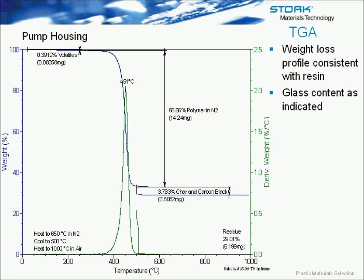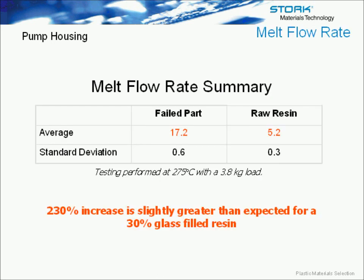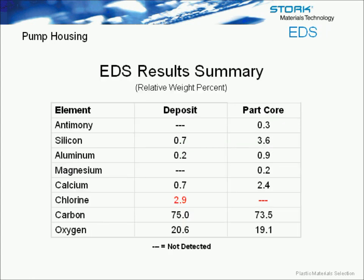TGA analysis was performed to make sure the glass content was where it was supposed to be, and indeed it was. We actually looked at the failed part and the raw resin, looking at core samples rather than surface samples, since the surface was pretty beat up. So overall, the results showed that the material of the pump housing was consistent with what it should have been and the raw resin supplied. One thing that was noted when we did melt flow rate analysis was that there was definitely an increase in the melt flow of the failed part, which indicated there was some definite degradation going on compared to the raw resin.